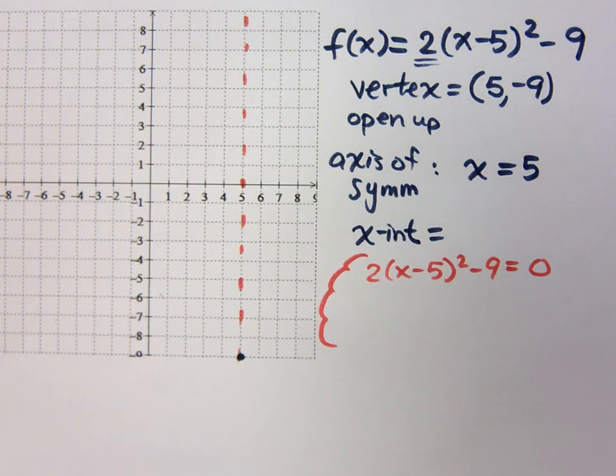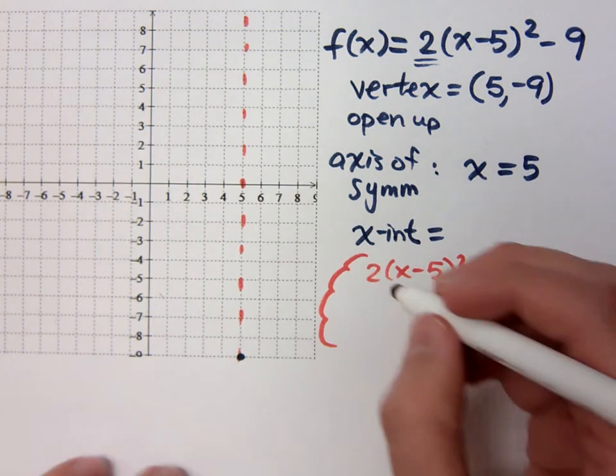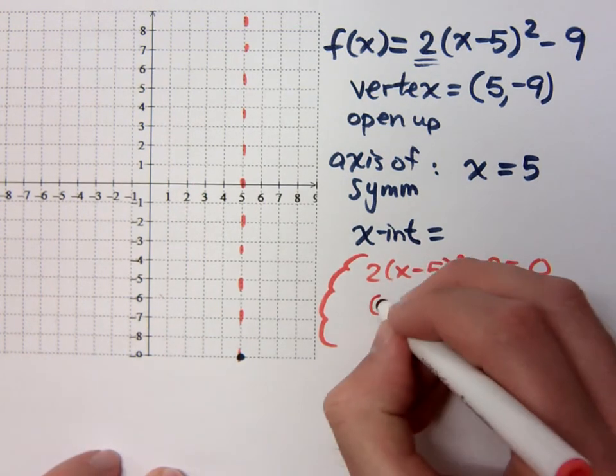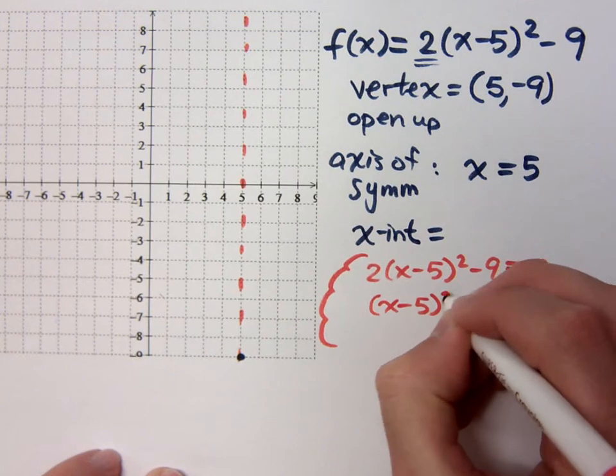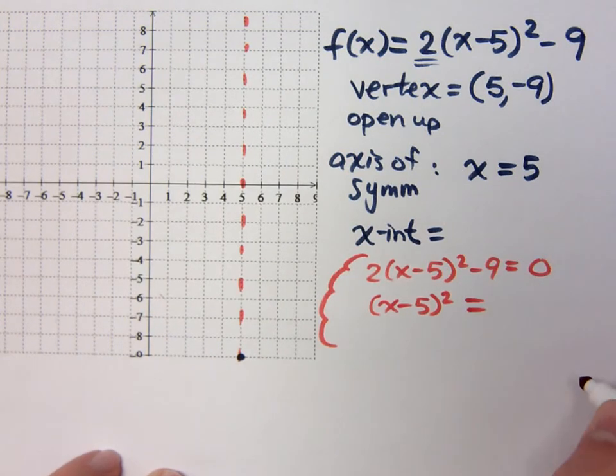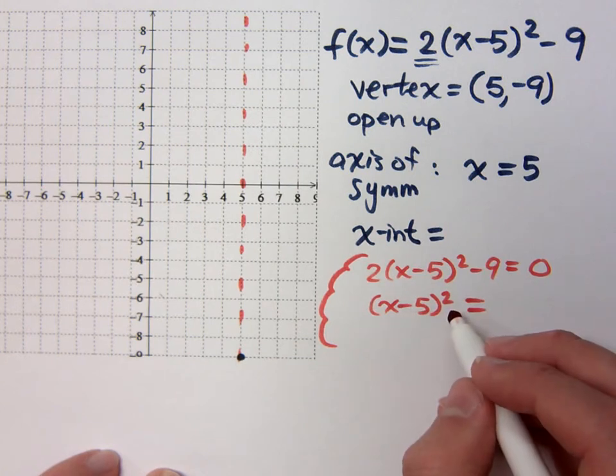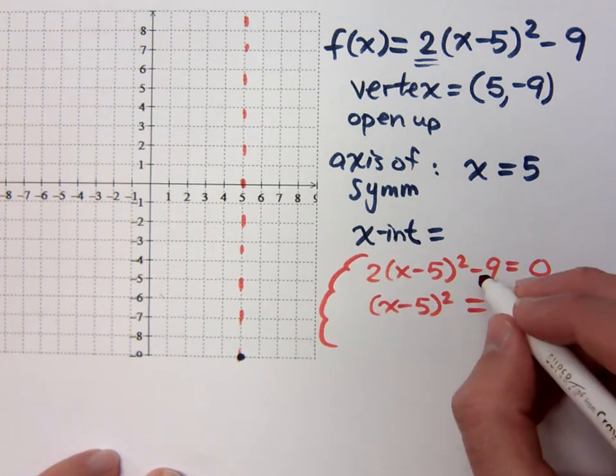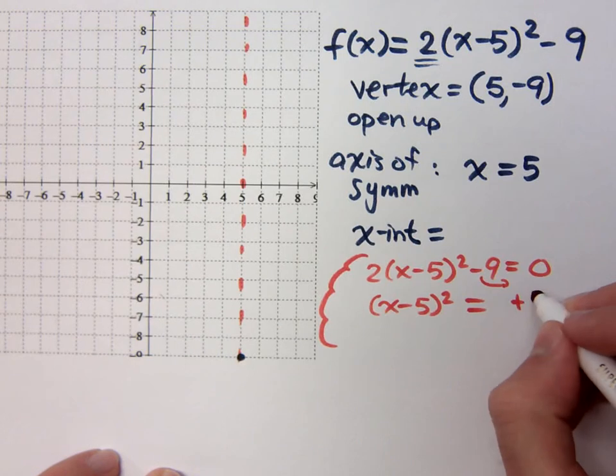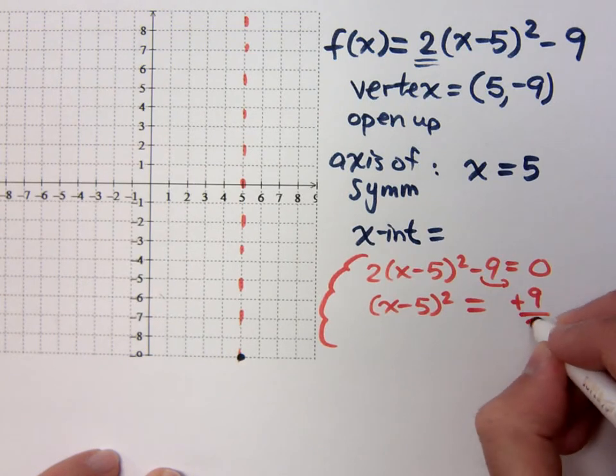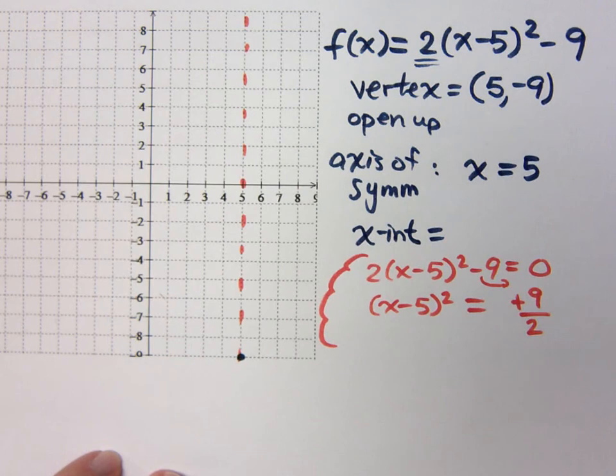I think we should use the square root property. Remember this? So if I use the square root property and I completely isolate my square, x minus 5 squared is equal to what? Do the math in your head. How do I get the square by itself? Had to add the 9 and then do what? Divide by 2. That's how I got the square by itself.